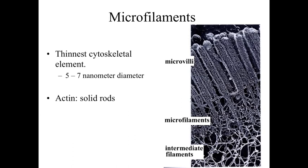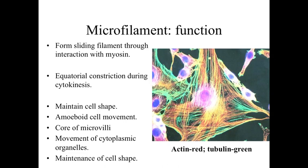The second type of cytoskeletal elements are microfilaments — the thinnest, about five to seven nanometers in diameter. Microfilaments are solid rods of actin, providing support and a variety of cellular functions. Most famously, actin is involved in the sliding filament arrangement within muscle cells, where solid rods of actin are dragged by myosin molecules — the actin isn't contracting but sliding across the myosin, and the myosin motors cause the entire muscle cell to contract.